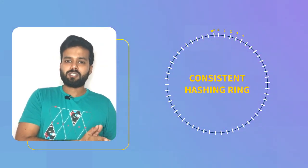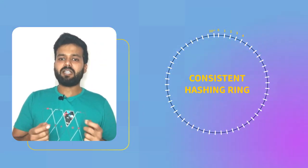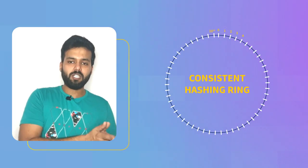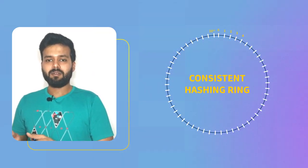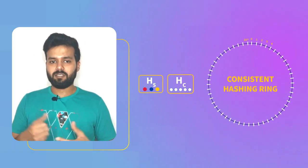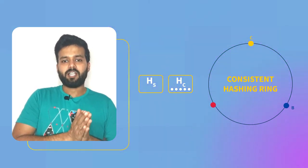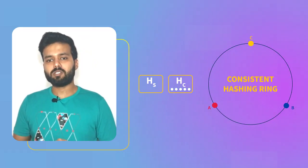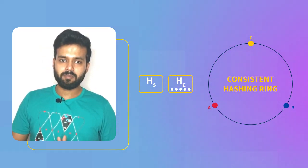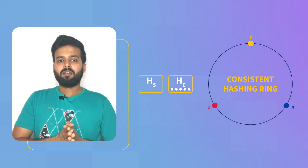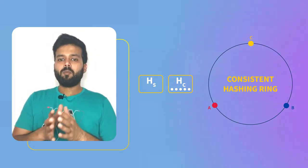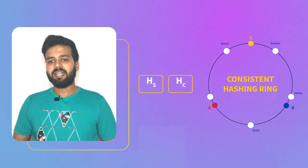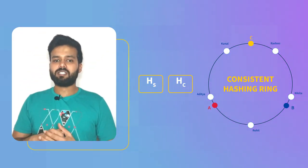Then we'll take two hash functions which will basically generate keys in the range of 0 to 10 to the power 80. Let's call them HS and HC. The HS hash function will be used to mark servers on the consistent hashing ring.